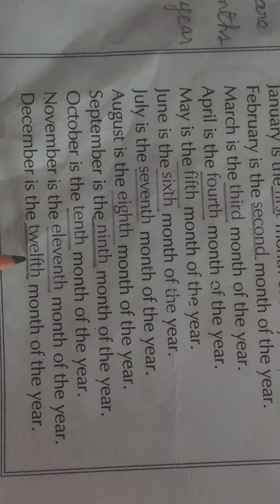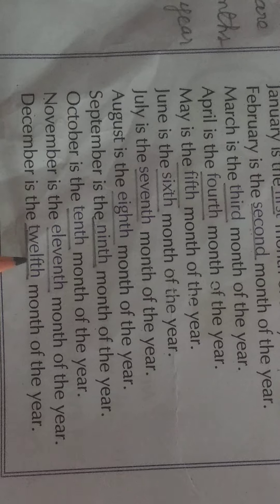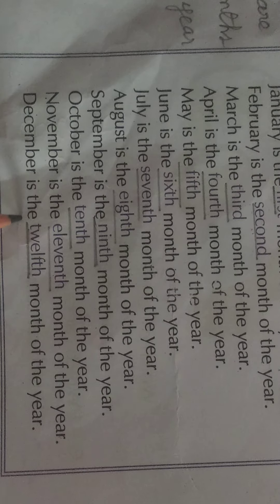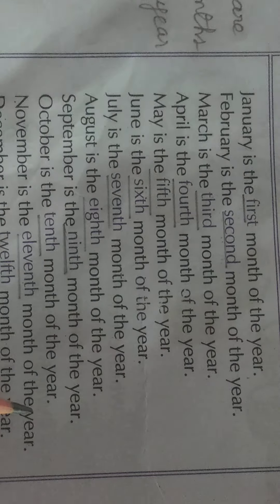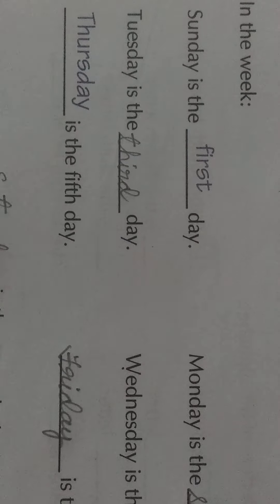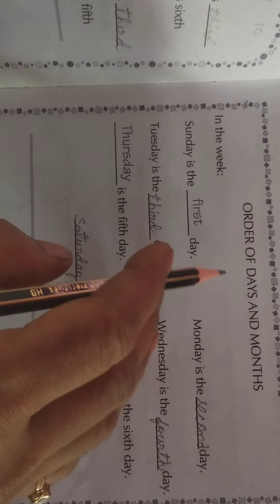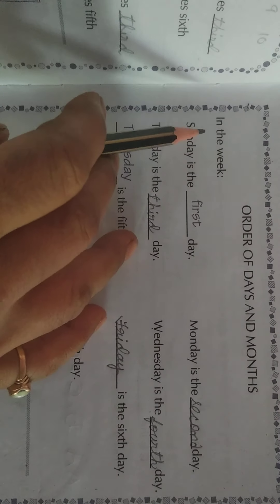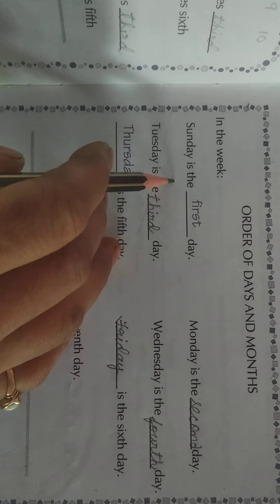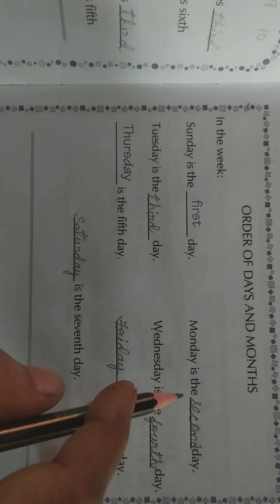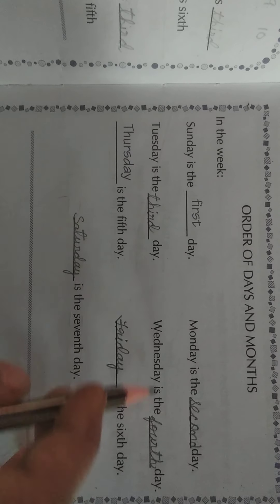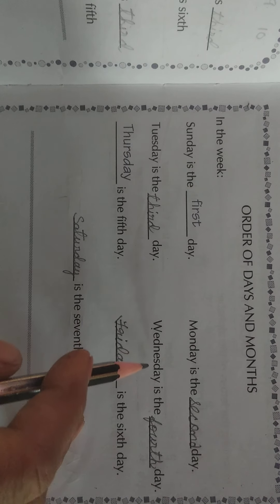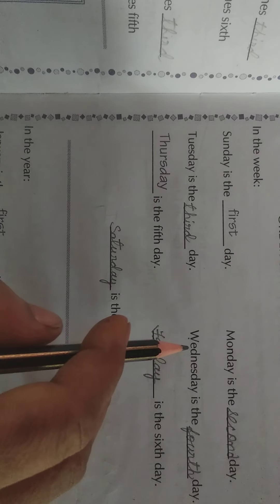Please write each of these two words — 'ninth' and 'twelfth' — ten times each and learn them. December is the twelfth month of the year. In the Zoom class we will discuss about this. This is for your good practice. Yesterday I sent the exercise on order of days and months. In the week: Sunday is the first day, Monday is the second day, Tuesday is the third day, Wednesday is the fourth day — you can pronounce it 'Wednesday' or 'Wensday'.